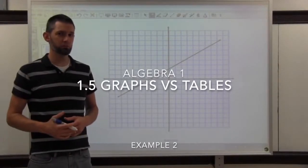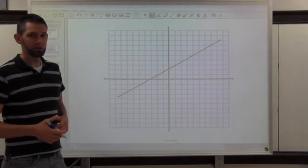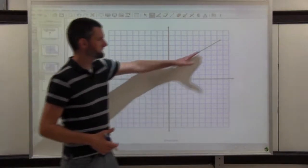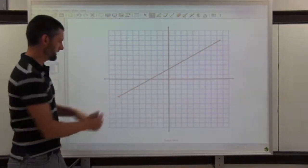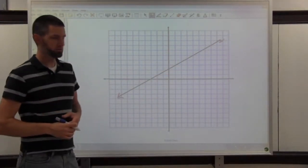This might seem like a strange question, but what is a line? When we talk about lines in algebra, this is a line. It has an arrow at each end. That means it goes forever. Lines need to go forever in both directions.